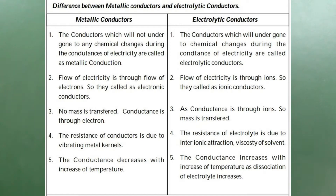Second difference: The flow of electricity in metallic conductors is through the flow of electrons — so they are called electronic conductors. In electrolytic conductors, the flow of electricity is through ions — so they are called ionic conductors.